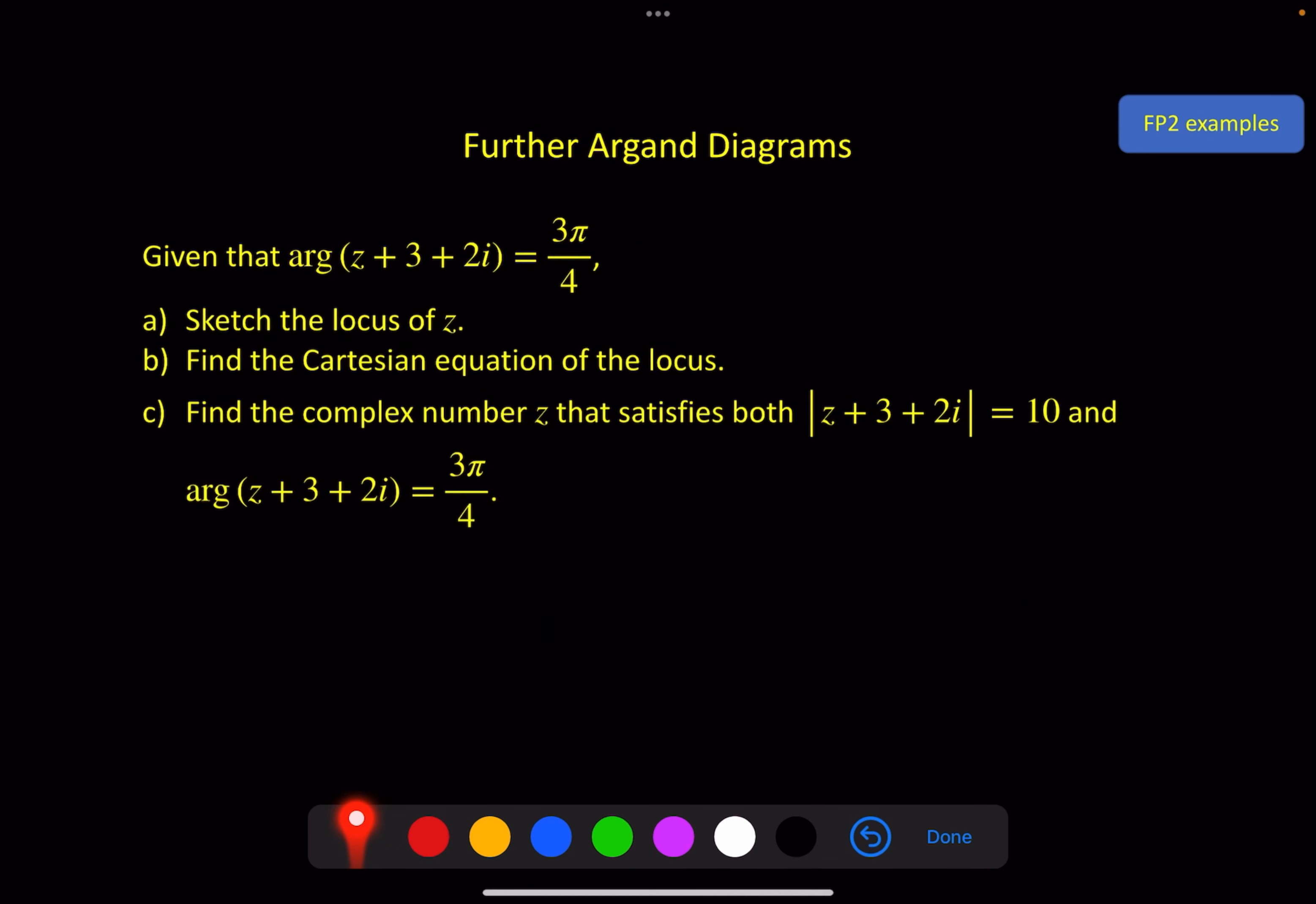Next example, moving away from the circles. Here we've got the argument of z + 3 + 2i is equal to 3π/4. Sketch the locus of z. So if I set up my Argand diagram, and I focused on this quadrant because I know that the complex number involved here, when you put the minus in to make it match one of the standard results, is -3 - 2i. So we're at -3 - 2i somewhere down here. But I need to draw this with an open circle, because this standard result is a half line, and the half line does not include the point itself.